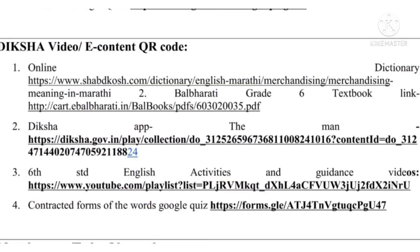Then in the next part, there is Diksha video or e-content. And in the e-content, you have given the link of online dictionary, Diksha app, then standard sixth activities and guidance video. And the last one, contracted forms of the words, Google quiz. There is a link of Google quiz. You can submit that quiz and you can get the results immediately.